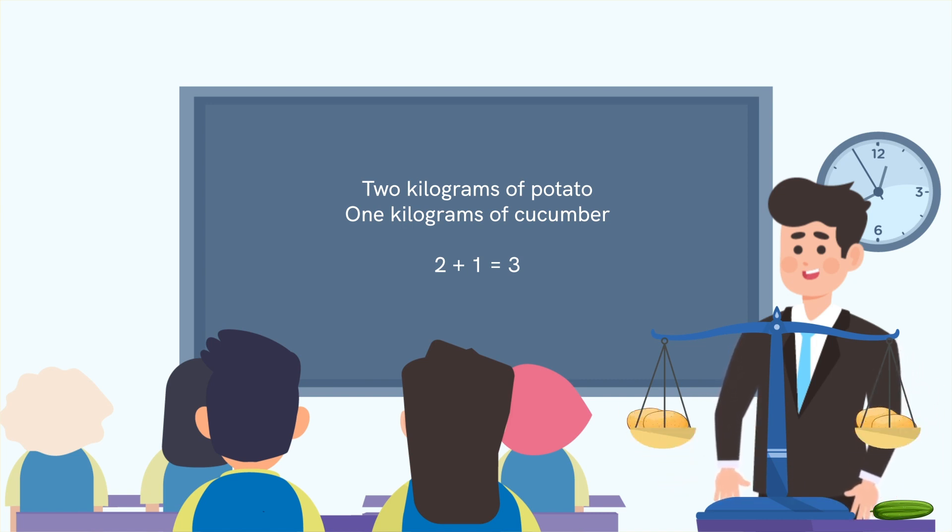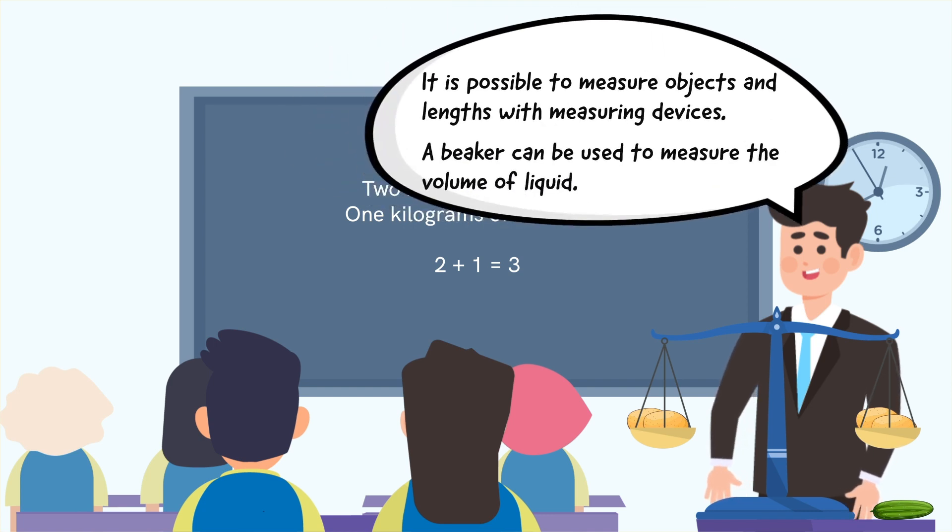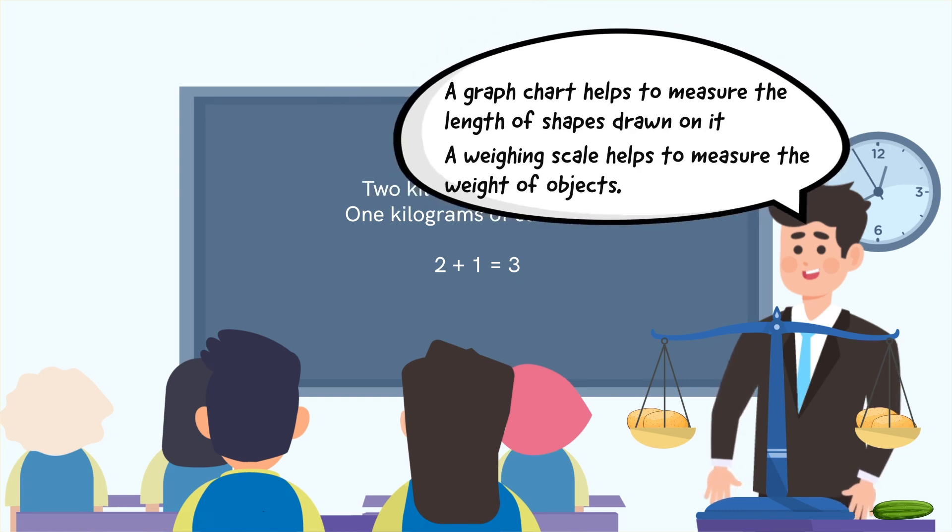Conclude the class by summarizing with the observations: It is possible to measure objects and length with measuring devices. A beaker can be used to measure the volume of liquid. A graph chart helps to measure the length of shapes drawn on it, and a weighing scale helps to measure the weight of objects.